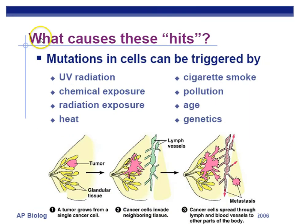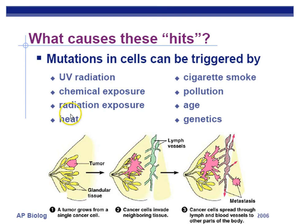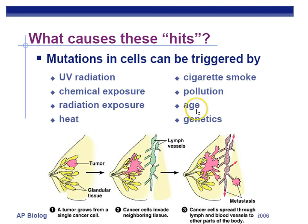What causes these mutations? Changes in DNA can be caused by UV radiation, which snaps the DNA and causes genes to not function properly. Other causes include chemical exposure like formaldehyde, radiation exposure, heat, cigarette smoke affecting lung DNA, pollution, age, and repeated cell division — replication errors over time can result in damaged genes like P53. Genetics is also a factor; some of these mutations can be inherited from your parents.